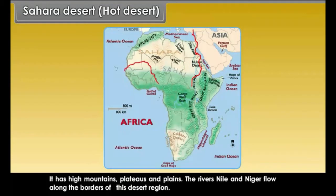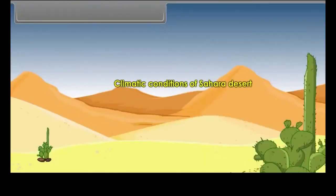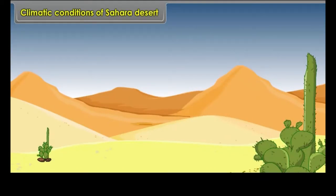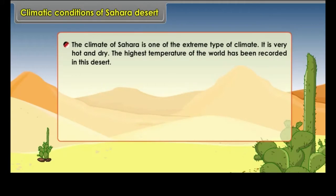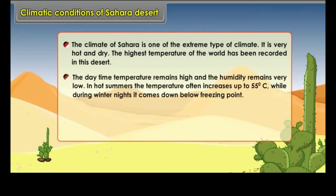The rivers Nile and Niger flow along the borders of the Sahara Desert region. The climate of Sahara is one of the most extreme types in the world — very hot and dry. The highest temperature in the world has been recorded in this desert. The daytime temperature remains high and humidity remains very low. In hot summers, the temperature often rises up to 55 degrees Celsius, while during winter nights it drops below freezing point.